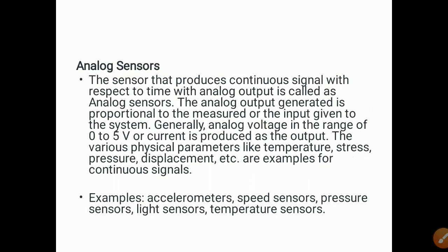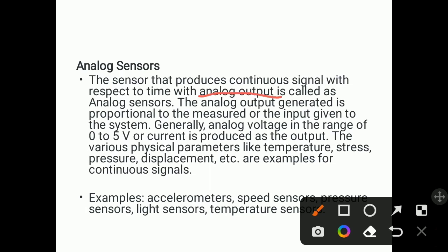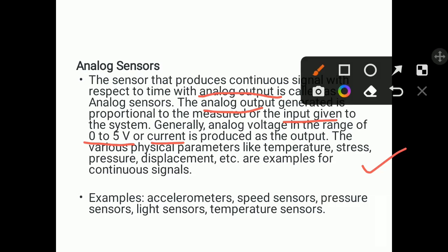Analog sensors produce a continuous signal with respect to time. The analog output generated is proportional to the measured input, and the range of output is typically 0 to 5 volts or a corresponding current. Various physical parameters like temperature, stress, pressure, and displacement are examples of continuous signals in analog form. Examples of analog sensors include accelerometers, speed sensors, pressure sensors, light sensors, and temperature sensors.